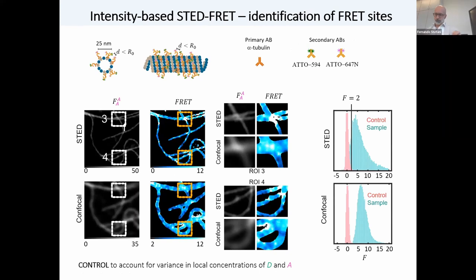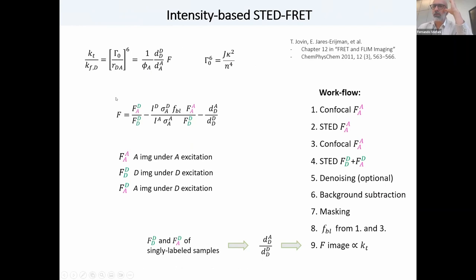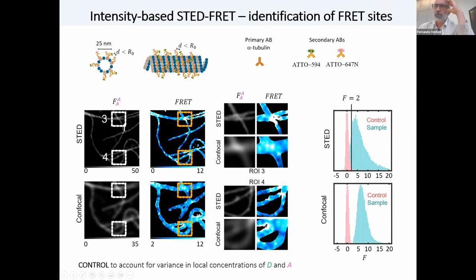And another control that you have to take into account to do this properly is that when you increase your resolution, you are reducing the averaging. And therefore, there could be variations, local variations, in the concentrations of donor and or acceptor. Therefore, one has to take that into account, because otherwise we may compute false positive FRET events. But this can be done by using samples labeled only with the donor and only with the acceptor under identical conditions. And we can compute the F values. So remember here, we compute FRET based on this F value. We are not computing FRET efficiencies, but just this F value that is proportional, basically, to the transfer rate of energy transfer.